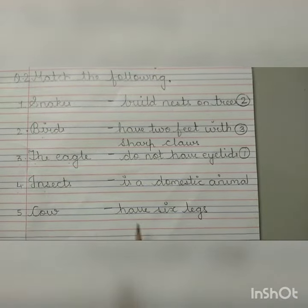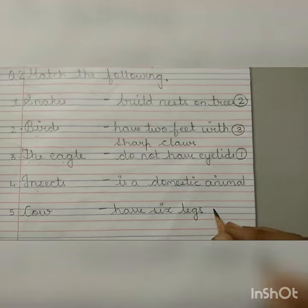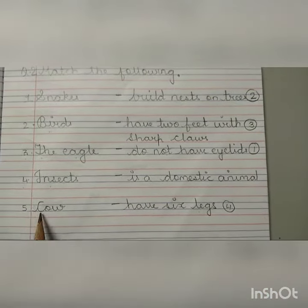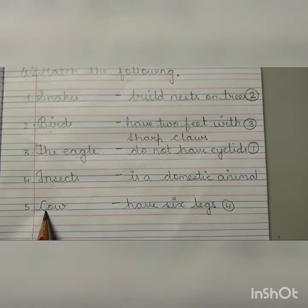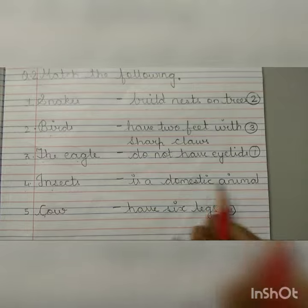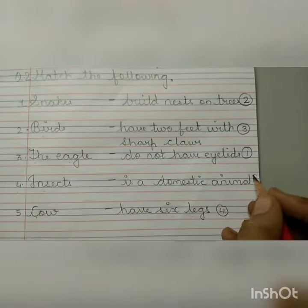Number 4: Insects. Insects have six legs. Write number 4. Number 5: Cow is a domestic animal. Write number 5.